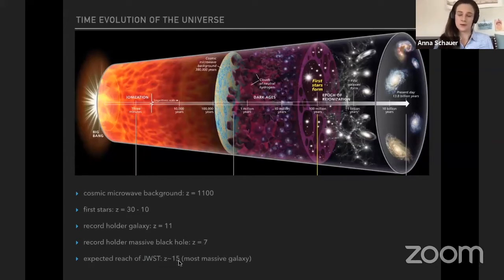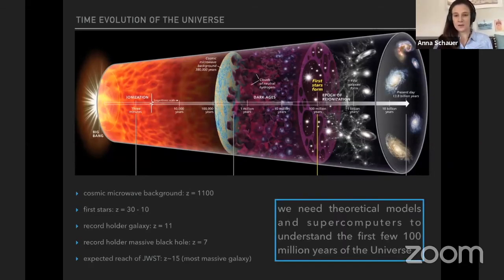However, James Webb will not be able to see a single population of population three stars because they are not luminous enough. They sit in tiny halos that I will show you later. So what I do is I run computer simulations and I do theoretical modeling to understand better when the first stars of the universe formed.